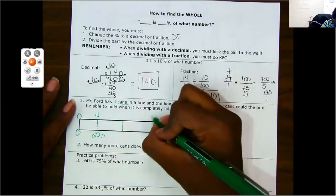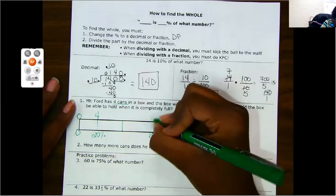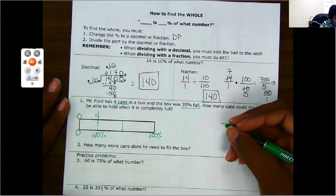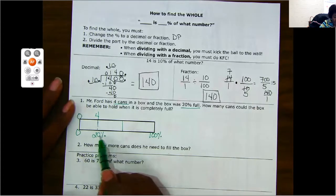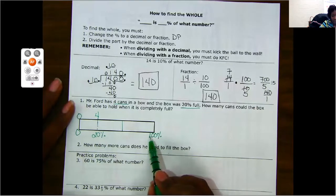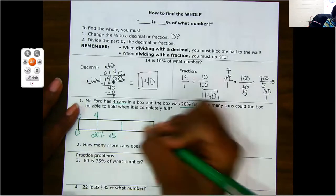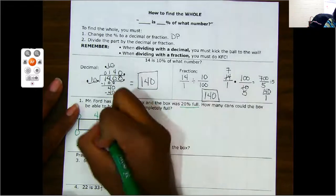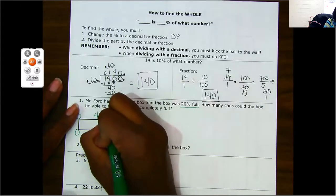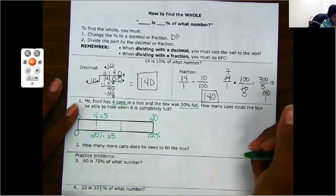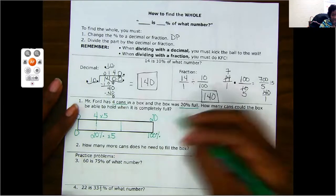We have now set up a proportion. I need to find the total. How many cans can fit in this box? Well, I'm going to see if I can find a relationship. Can I get from 20% to 100%? I can. If I multiply by five, I can get to 100%. So I should be able to do the same on the top. Four times five would get me 20. 20 cans can fit in this box.